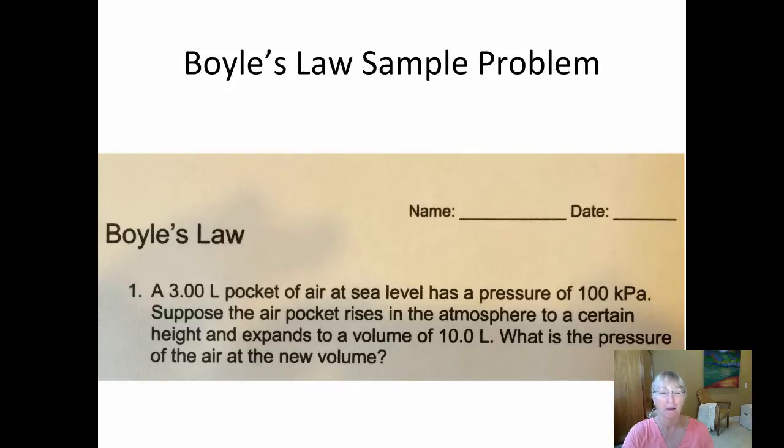A 3-liter pocket of air at sea level has a pressure of 100 kilopascals. Suppose the air pocket rises in the atmosphere to a certain height and expands to a volume of 10.0 liters. What is the pressure of the air at the new volume?